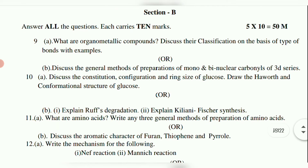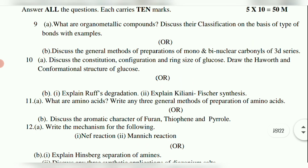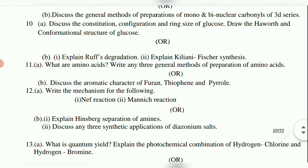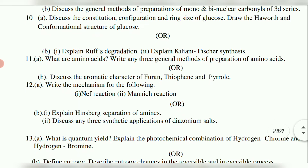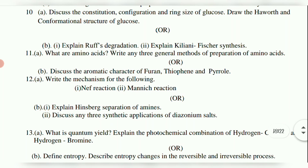Question 12a: Write the mechanism for the Reimer-Tiemann reaction and Mannich reaction. Question 12b: Explain Hinsberg separation of amines, and discuss any three synthetic applications of diazonium salts. Question 13a: What is quantum yield? Explain the photochemical combination of hydrogen-chlorine and hydrogen-bromine. Question 13b: Define entropy; describe entropy changes in reversible and irreversible processes.